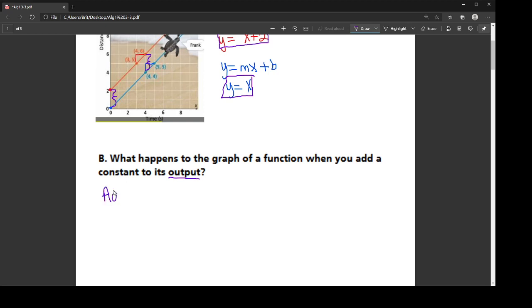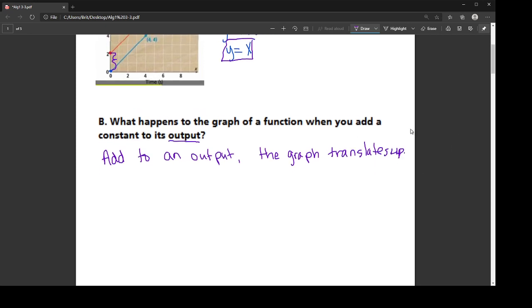So if I add to an output, the graph translates. Now here's the thing, when you add to it, it goes up. If you subtract from the output, the graph goes in the other direction. The graph translates down.